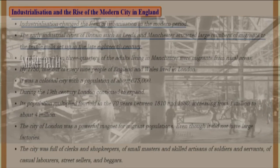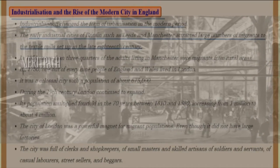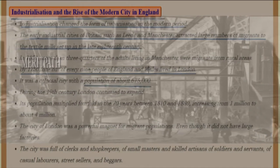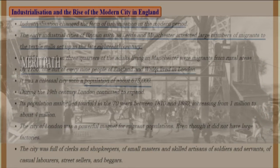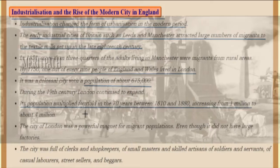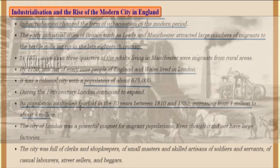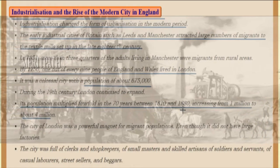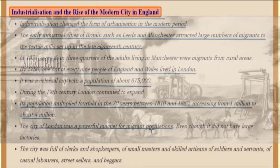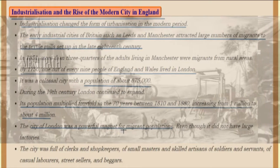The early industrial cities of Britain, such as Leeds and Manchester, attracted large numbers of migrants to the textile mills set up in the late 18th century. By 1851, more than three-quarters of the adults living in Manchester were migrants from rural areas. By 1750, one out of every nine people of England and Wales lived in London — a colossal city with a population of about 6 lakh 75,000.